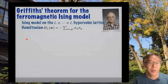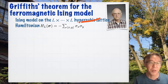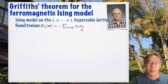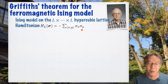Let me go back to the basics: the ferromagnetic Ising model on the standard L by L hypercubic lattice with nearest neighbor interaction. This model exhibits ferromagnetic order at low temperatures, provided that you are in dimensions two or higher.